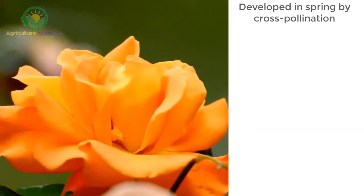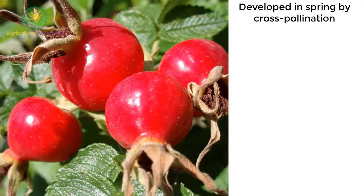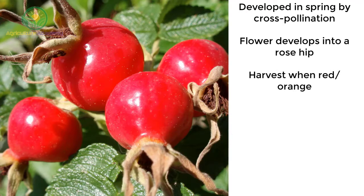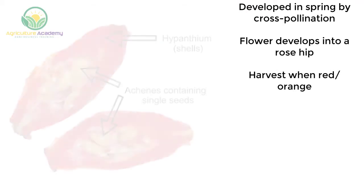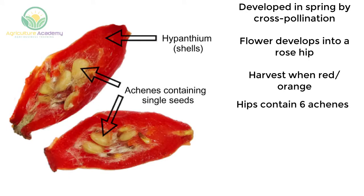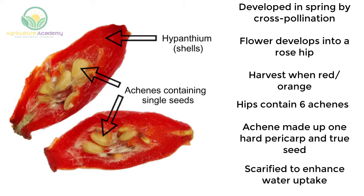Cultivars are developed through cross-pollination in the spring. The fertilized flower develops into a rose hip, which is harvested once it turns red or orange. These hips contain six achines. An achine is made up of a hard pericarp and a true seed.